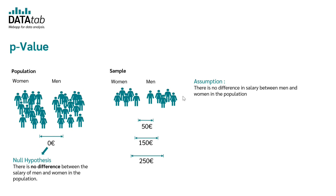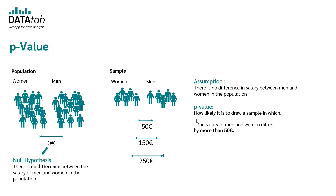Now we will come to the p-value. In the first case, the p-value tells us how likely it is to draw a sample in which the salary of men and women differs by more than 50 euros. In the second case, the p-value would tell us how likely it is to draw a sample in which the salary difference of men and women differs by more than 150 euros.